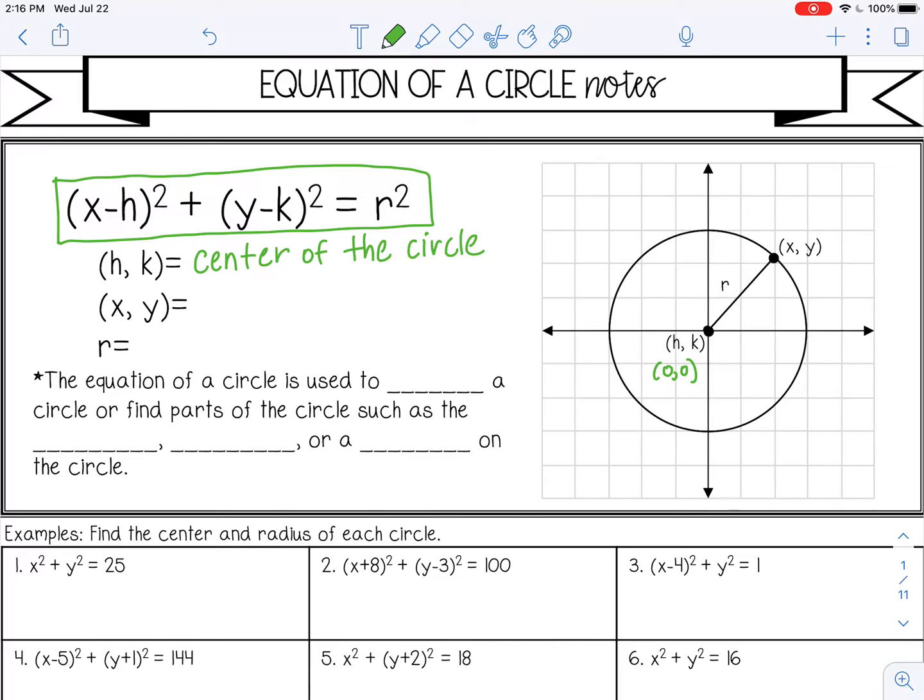And then x and y represent any point on the circle. So if you put those together as an ordered pair, it's any point on the circle. And there are actually infinitely many points on the circle. The one in your example is (2,2), but it can be any point along the circle. And then r is your radius.